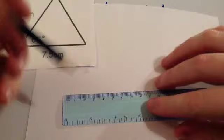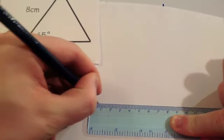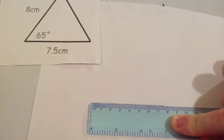Okay, so let's start off by drawing the base. The base was 7.5cm. So get your ruler and draw very, very accurately 7.5cm. Like so.